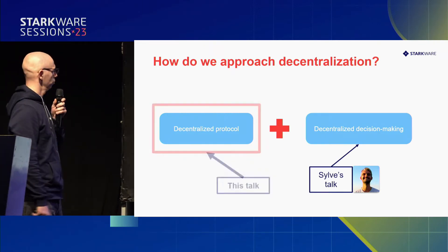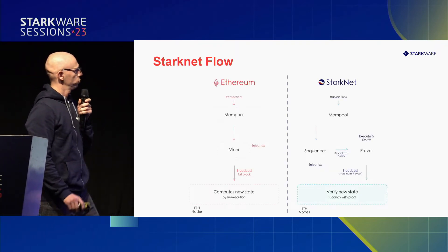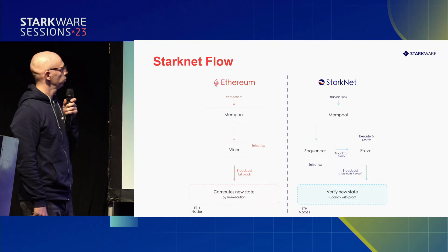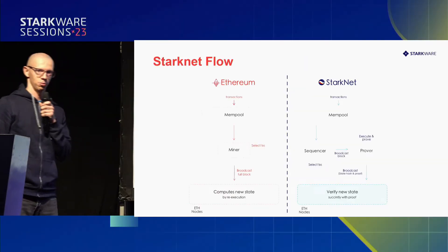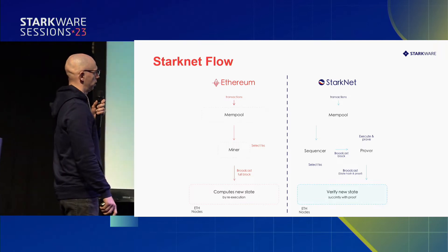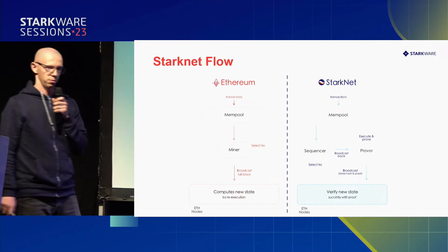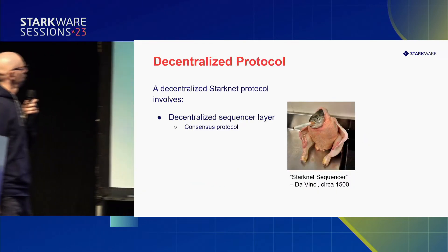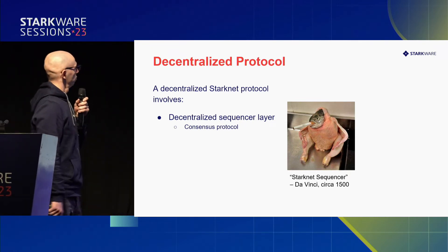The way to achieve these things is through decentralization. You could divide decentralization into two main areas: decision-making and governance, and the protocol. The difference between Starknet and Ethereum is they have one square and we have two squares with an arrow between them, and the presence of these two squares introduces many unpleasant complications. In particular, we have to decentralize two distinct layers of operation as opposed to just the mining or sequencing in Ethereum.